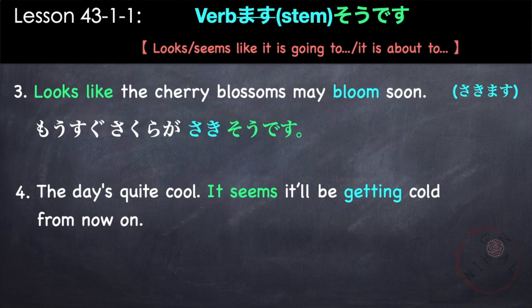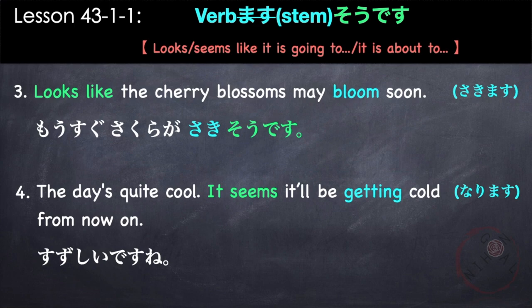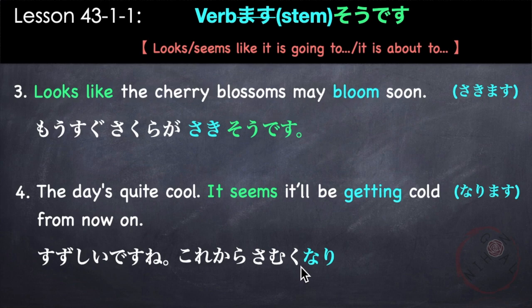The day is quite cool — it seems it will be getting cold from now on. Our verb is to get cold, so we have narimasu, to become. Suzushii desu ne — the day is quite cool. Kore kara — from now on — samuku nari, so we get the stem nari. To become cold is samuku narimasu. Samuku nari so desu. Suzushii desu ne, kore kara samuku nari so desu.